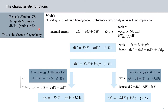So far we've learned about four thermodynamic functions that represent energy: U, H, A, and G. We will now look at these functions in more detail and derive some important relations. We'll be limiting ourselves to closed systems with exclusively pure homogeneous substances, where the only work that may occur is in the form of volume expansion.